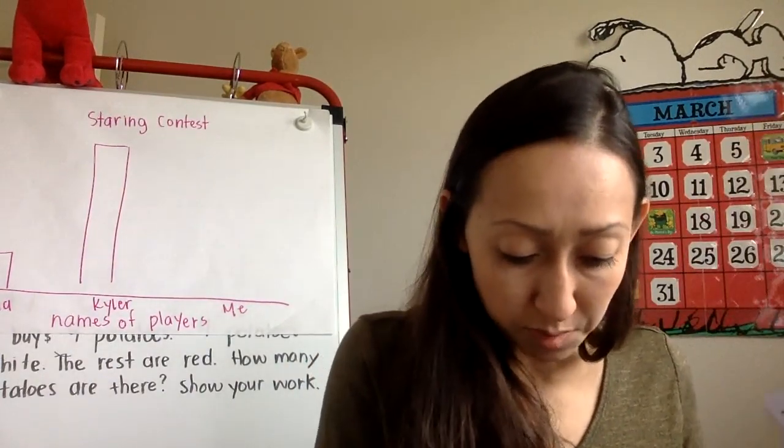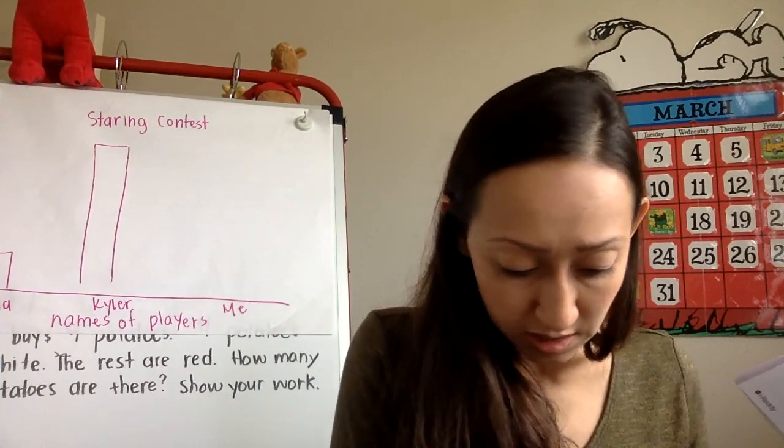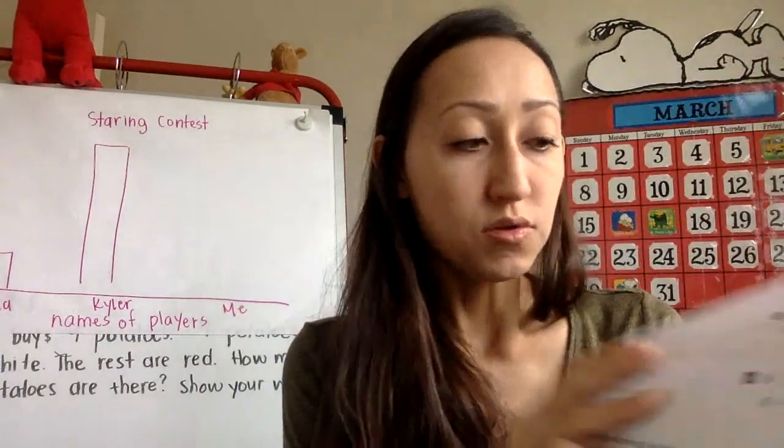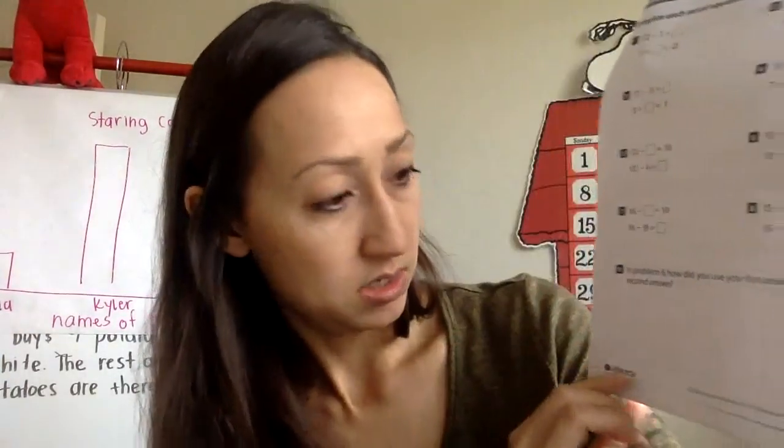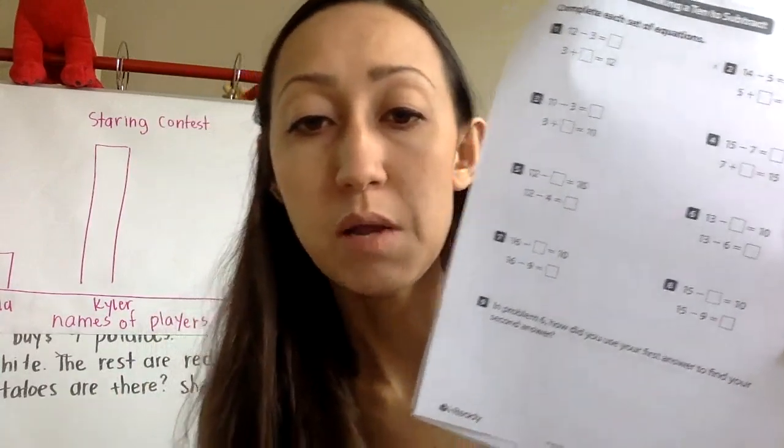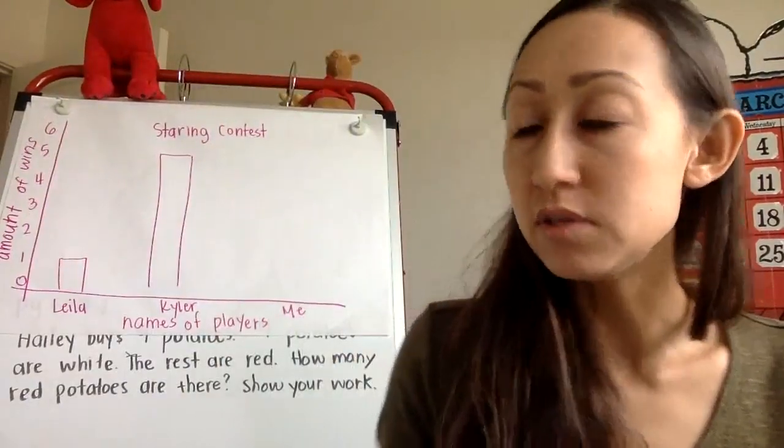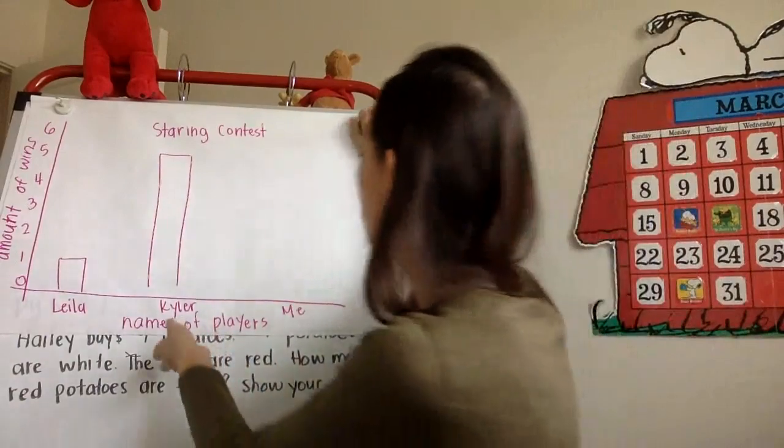Next, you're going to be doing some pages in your math. So today, I want you to do pages five, and then six and seven. But I'm going to show you some examples of how I want it to get done. So page five is a review of some of the strategies we used yesterday.